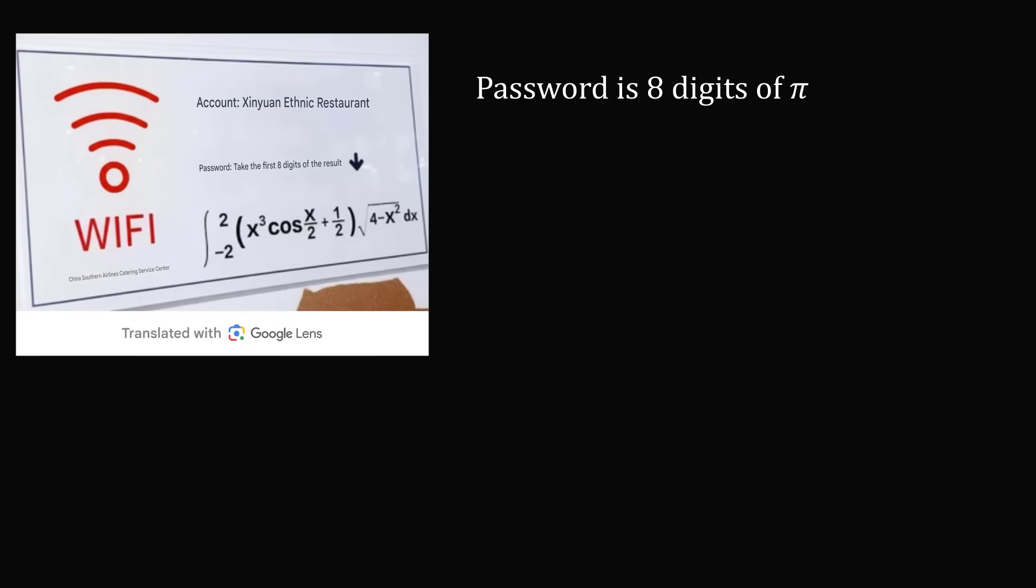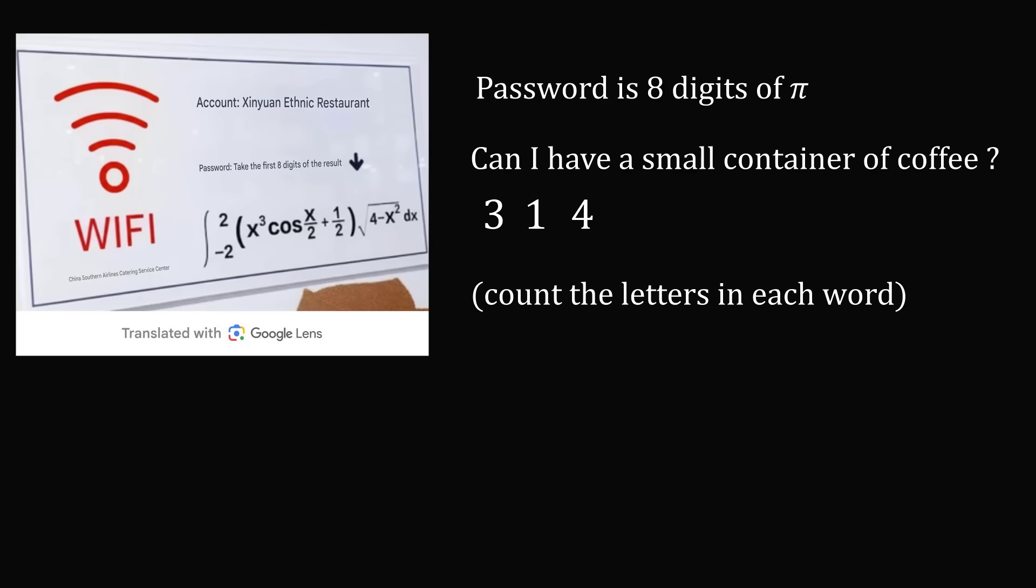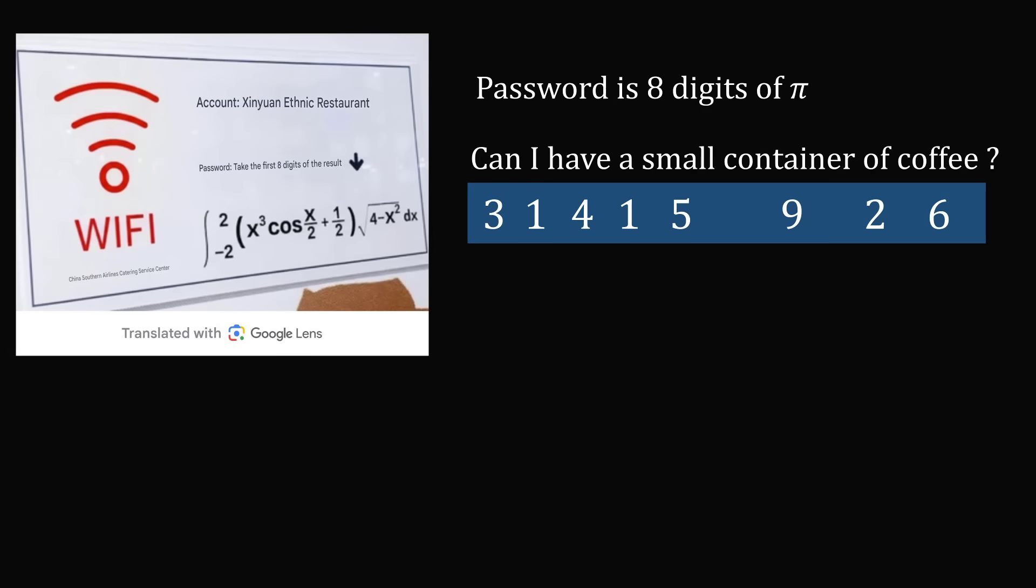How can we remember that? Well, there's a nice sentence to remember this. Can I have a small container of coffee? Count the letters in each word. So can has three letters. I has one letter. And we just continue counting the number of letters in each word. And we end up with exactly the digits of pi. Three, one, four, one, five, nine, two, six. And that is the Wi-Fi password.